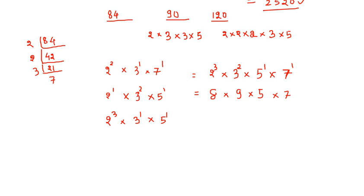Our answer will be 8 into 9 is 72, 72 into 5 is 360, and 360 into 7 is 2520. So the LCM of 84, 90, and 120 is also 2520.